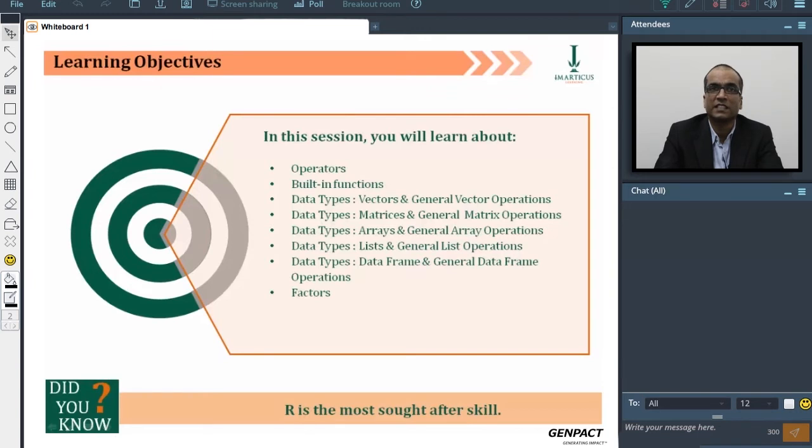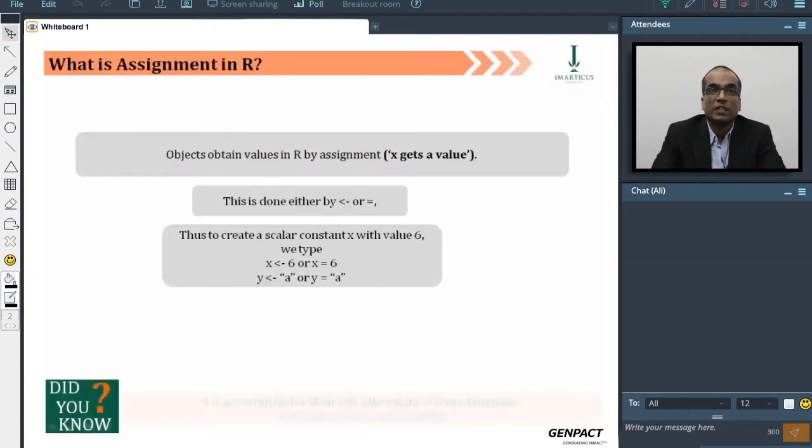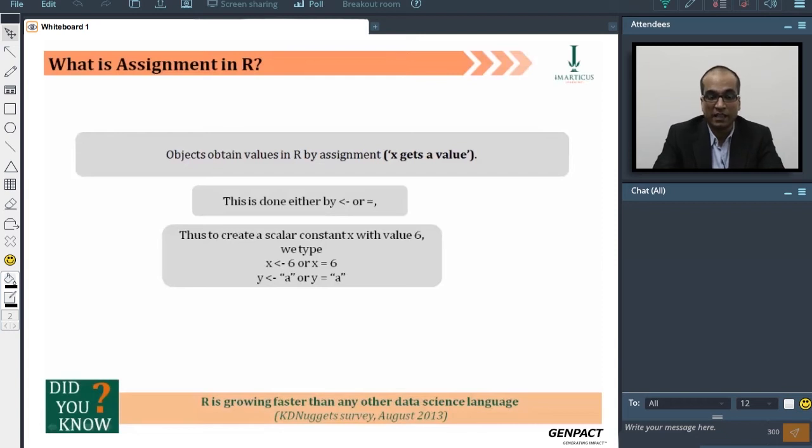What is assignment in R? When you see a symbol like a less than with a dash, or a single equal to, that basically means an assignment operator. It usually goes from the right to the left, which indicates that some operation on the right is being done and that corresponding value or output is allocated to some term on the left-hand side of the operator.